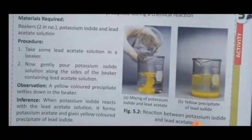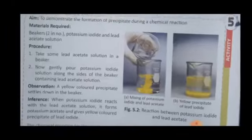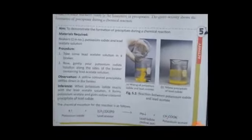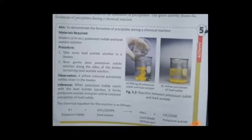The yellow color compound formed is lead iodide. When you mix potassium iodide and lead acetate, lead iodide and potassium acetate are formed as a result of a double decomposition or precipitation reaction. You can see the reaction: KI (potassium iodide) + lead acetate → lead iodide (yellow precipitate) + potassium acetate.